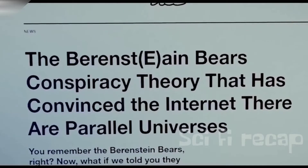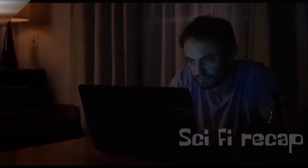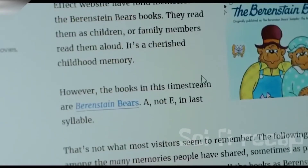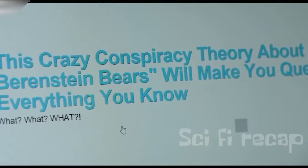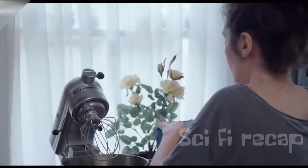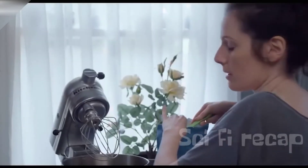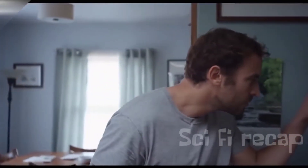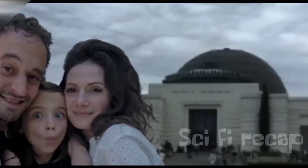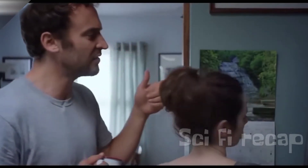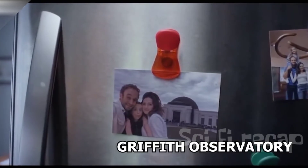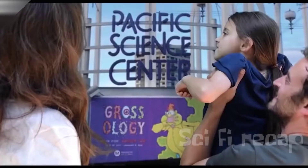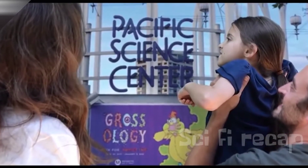Brendan continues to look for information about it until he finally finds a theory that explains the incident, namely the Mandela Effect theory. The next day, Brendan is confused by the photo of his family on the refrigerator. He asks his wife where the photo was taken, and Claire replies that it was taken in front of the Griffith Observatory, but Brendan is very sure that they took pictures at the Pacific Science Center in Seattle.